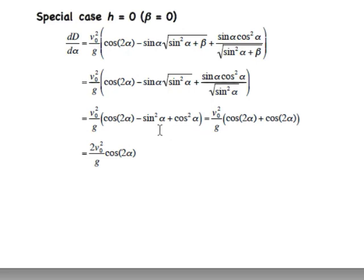Well, cosine squared of alpha minus sine squared of alpha just happens to be the cosine of 2 alpha. So, here we have cosine of 2 alpha plus cosine of 2 alpha. So, we have 2v naught squared over g times cosine of 2 alpha, which is exactly what we got before with the range equation for the derivative of the range with respect to alpha when the launch was at the same height as the landing. So, let's check.